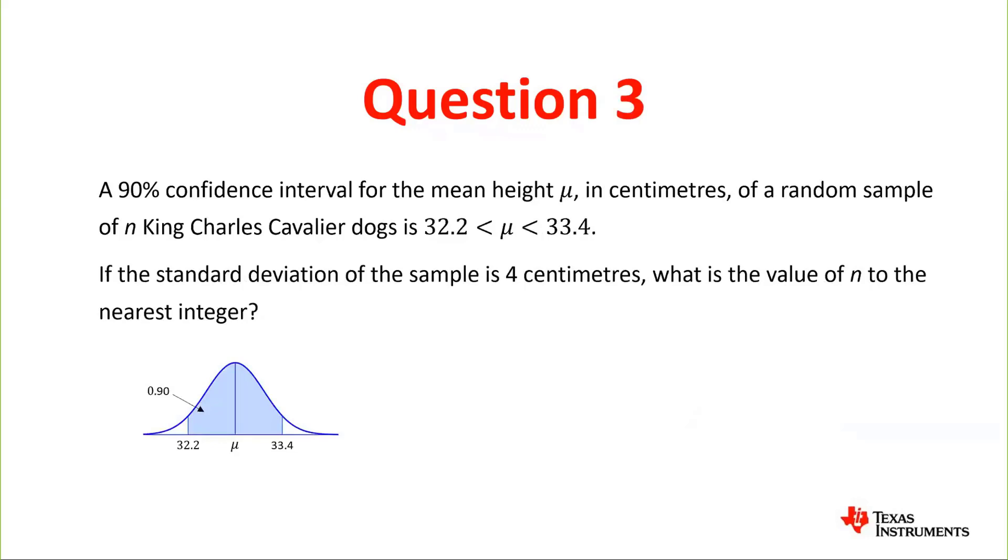So again we have our model of the normal distribution. We have our 90% in between the two endpoints, 32.2 and 33.4. We again will have our equation, but this time for a 90% confidence interval it's 1.64. And again we're going to look at the mean error which is one side from the mean to the endpoint, and that will be equal to 1.64 s over root n.